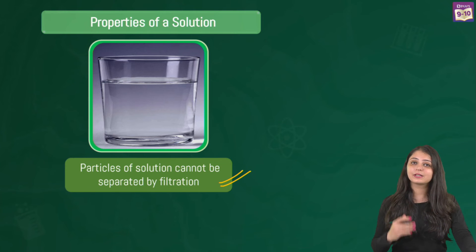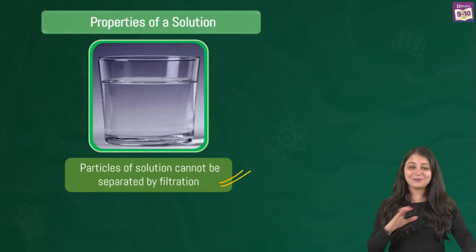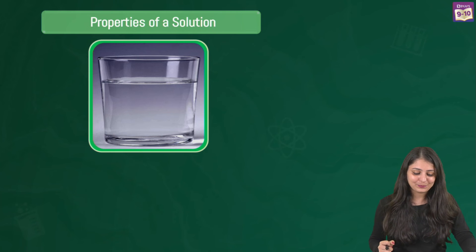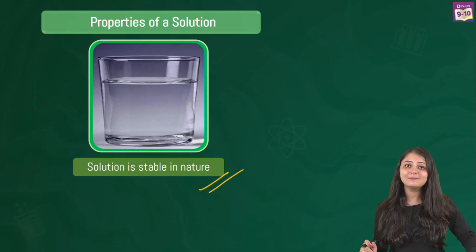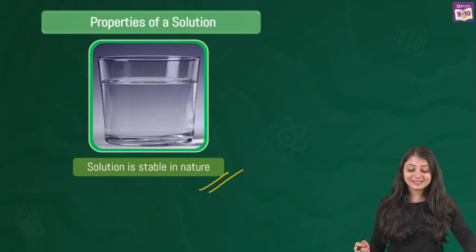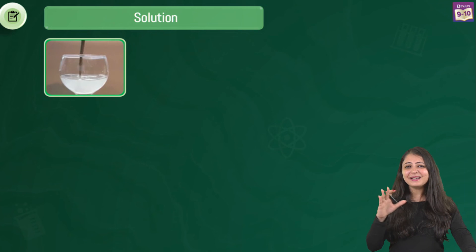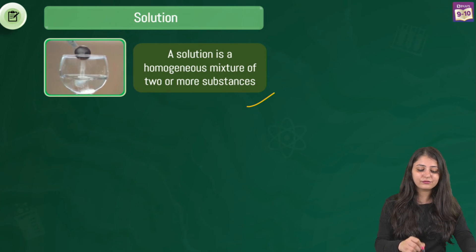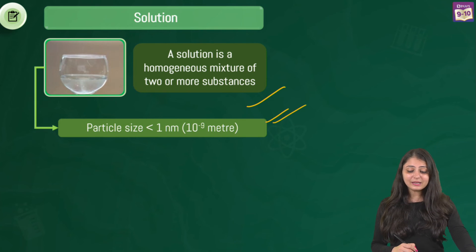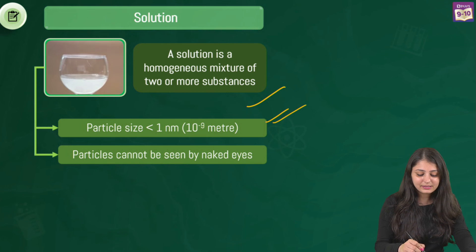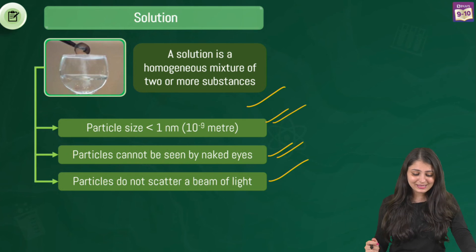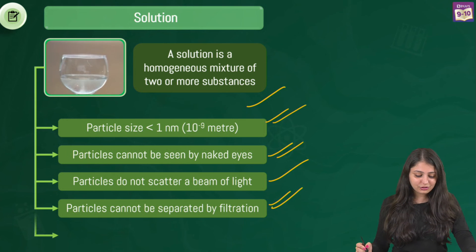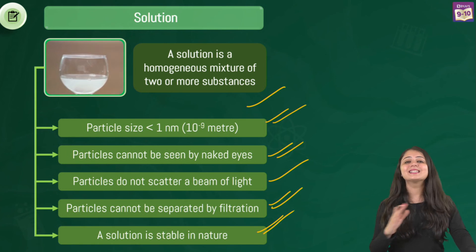The fourth property: particles of a solution cannot be separated by filtration. The particles are so very small that filter paper is of no use. The fifth property: a solution is stable in nature — if you leave it undisturbed, the particles will not settle down. To summarize: solutions are homogeneous mixtures of two or more substances; particle size is less than one nanometer in diameter; particles cannot be seen by the naked eye; particles do not scatter a beam of light; and particles cannot be separated by filtration.